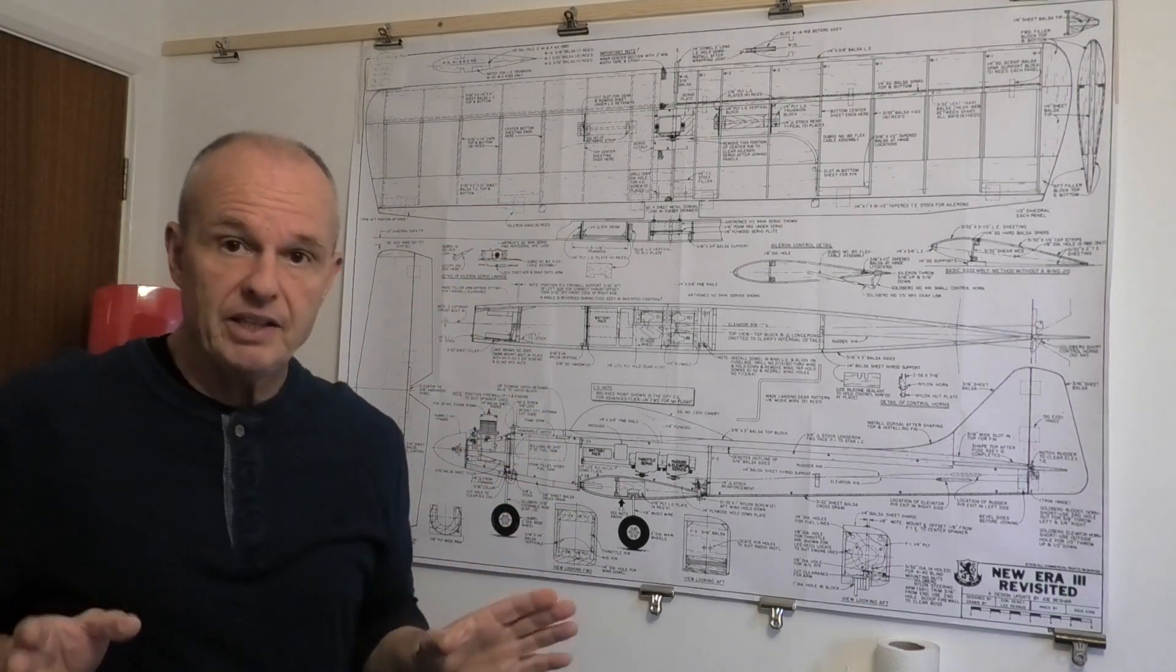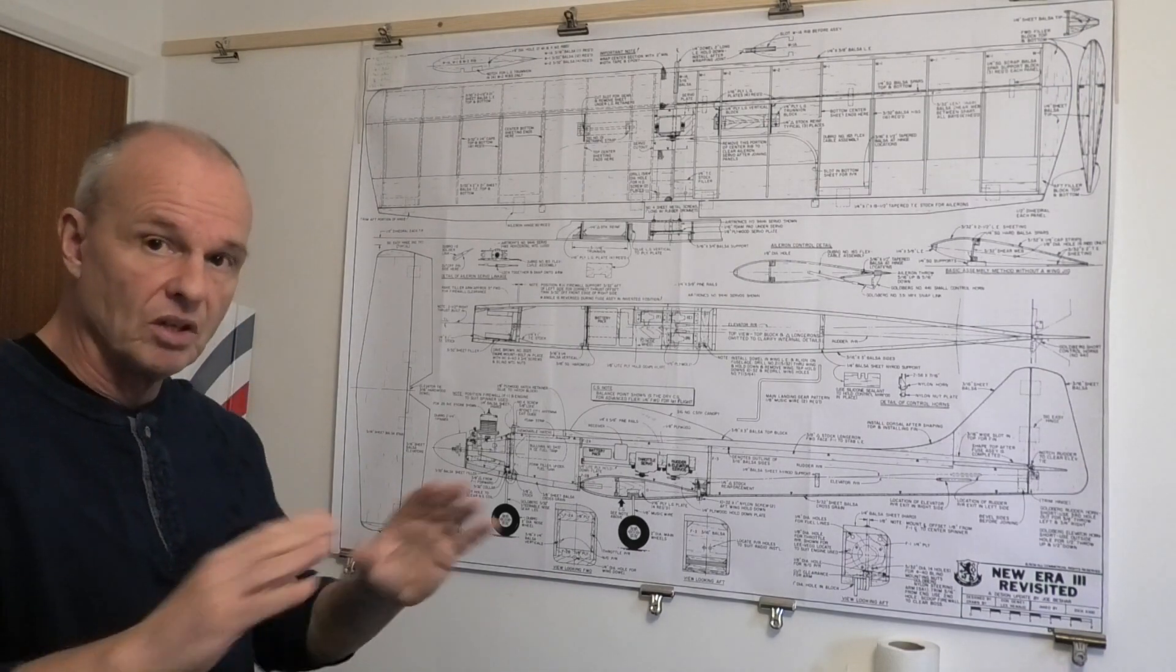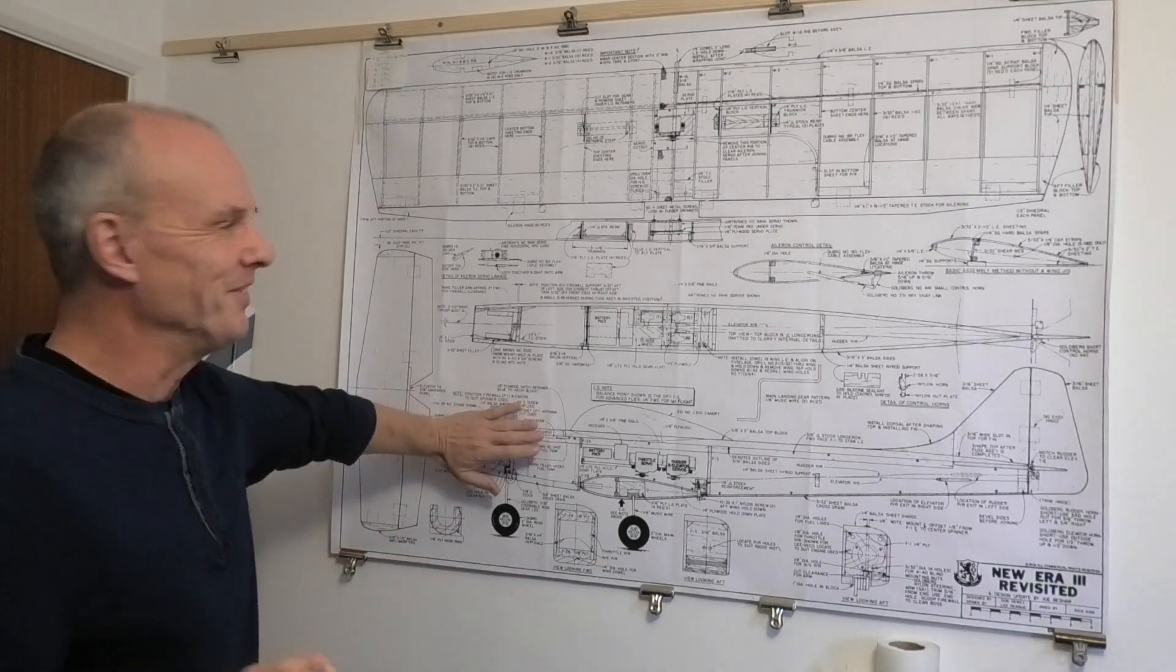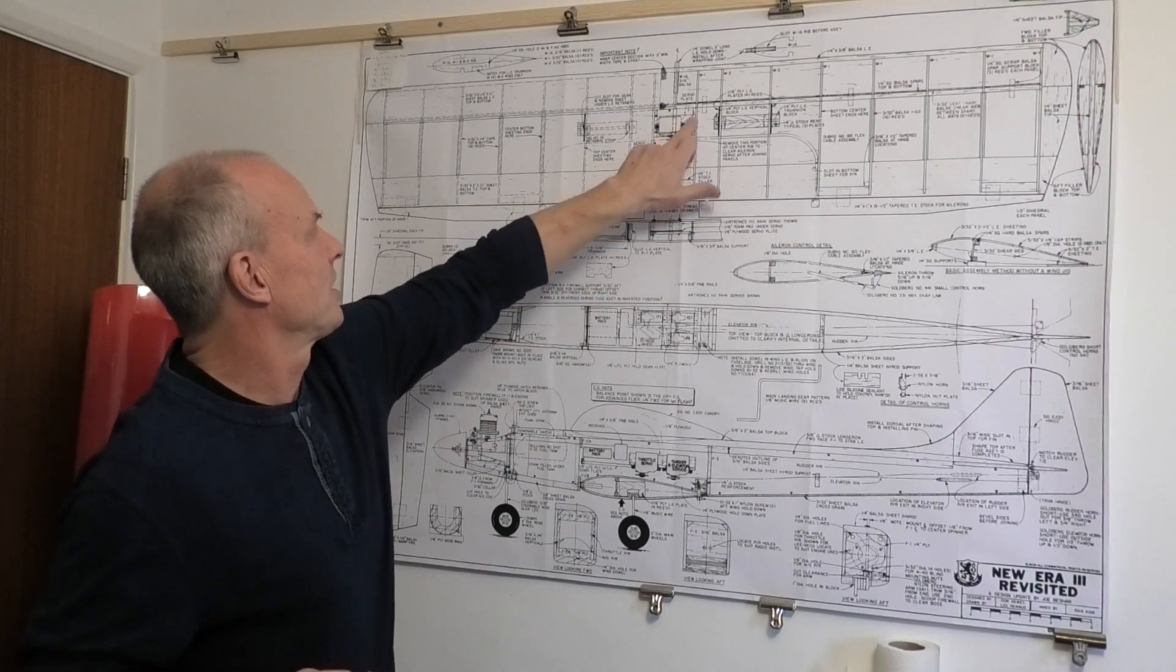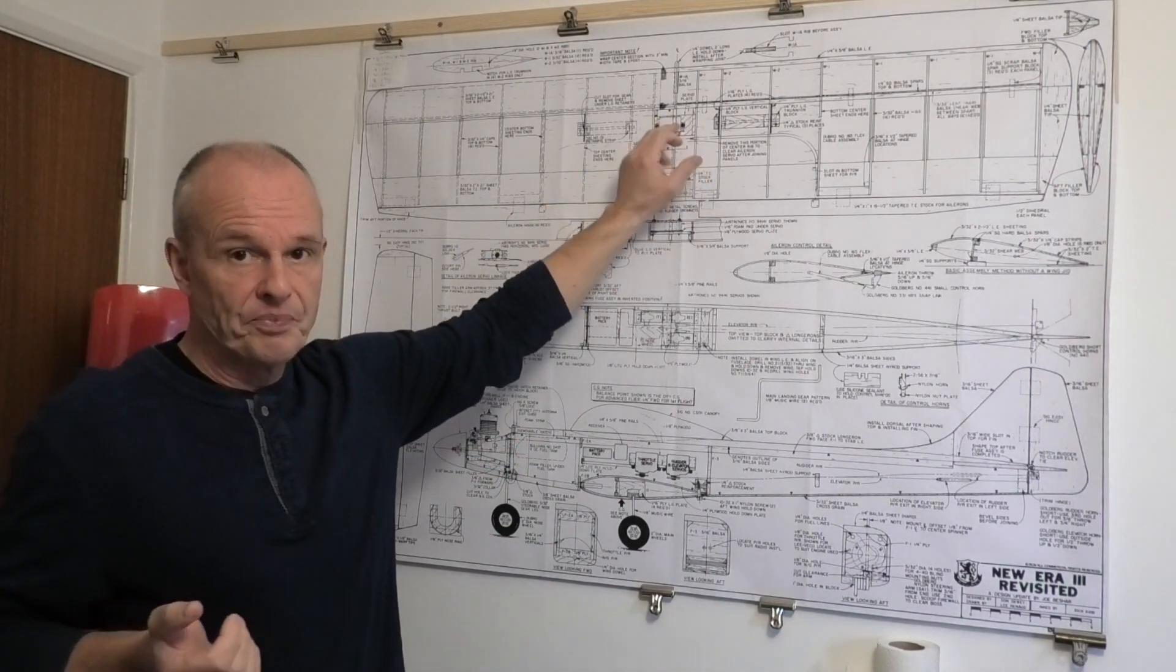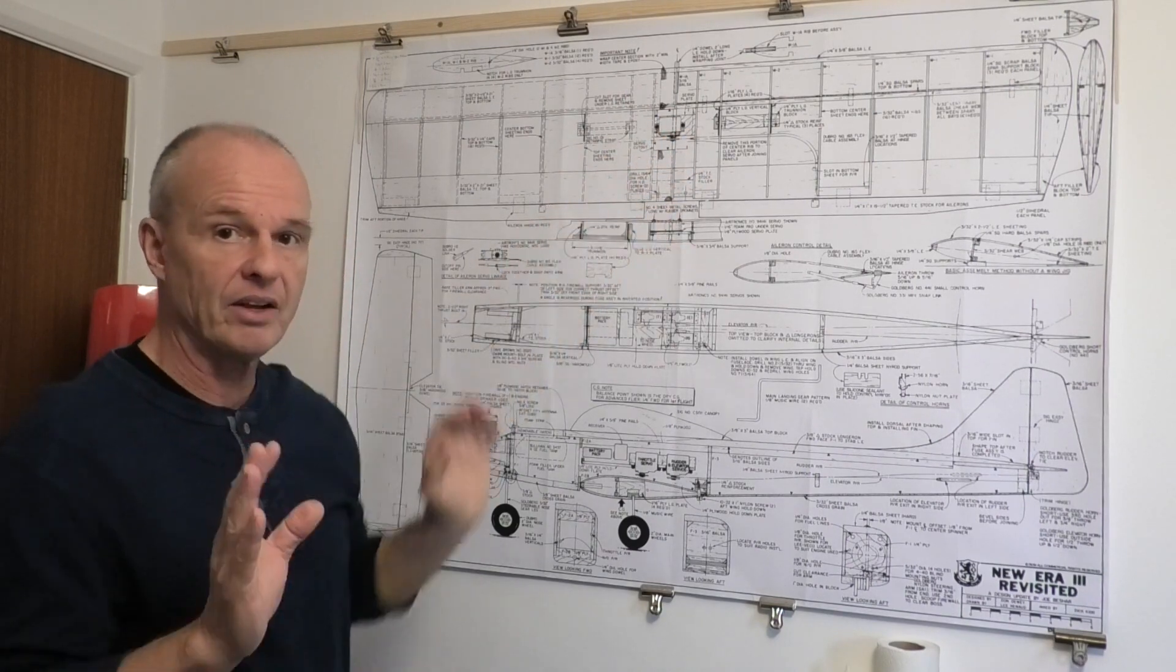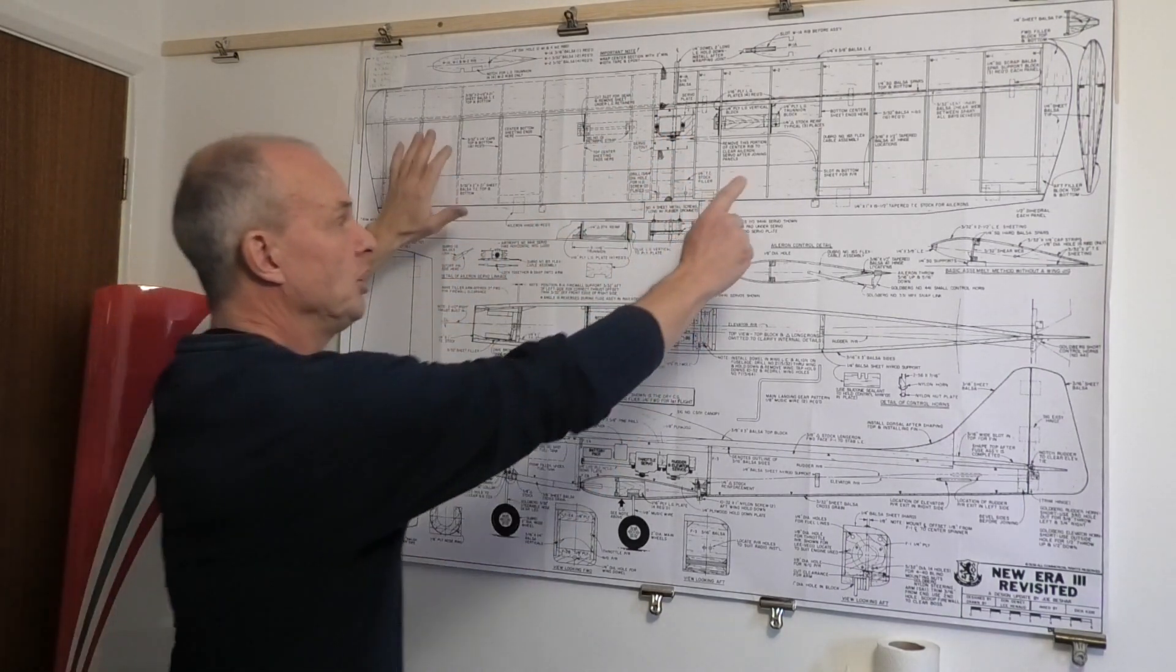The only change that I'm going to make to this is not related to the design, well except for the siting of the engine, and it's just how the ailerons function. At the moment it's got this single central servo and I think I'm going to be doing away with that and just putting in a couple of wing servos.